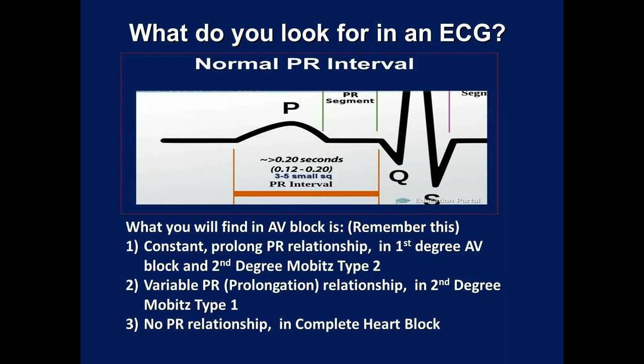3. PR interval variable, no relationship between P and QRS — complete heart block. Examples of these blocks will be discussed below.